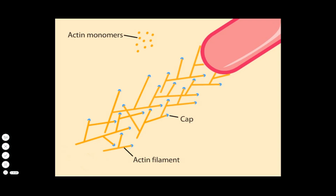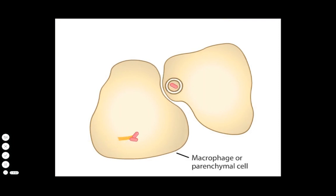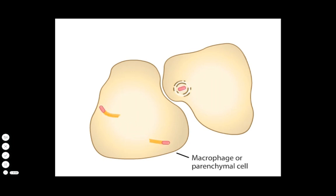The growth of the actin tails can force a bacterium into the plasma membrane, creating a protrusion that a neighboring cell can take up by phagocytosis. The new cell is now a host to Listeria and continues the infection.